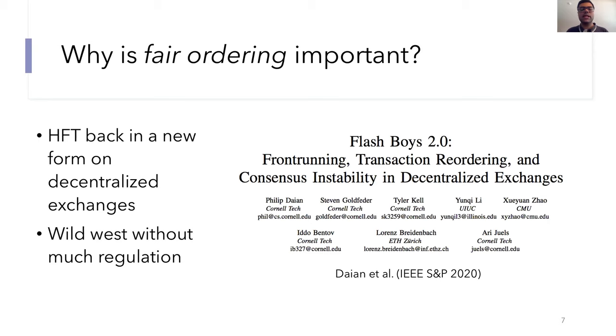So they capitalize on this information asymmetry in order to make small profits on a really large volume of transactions. Over the years, high-frequency trading has been subject to a lot of regulation, and it's no longer the wild beast it once was. But in some sense, high-frequency trading is exactly what we're seeing on decentralized exchanges today. So this recent paper by Phil Dian and others at S&P 2020 showed the rampant rise of bots on the Ethereum network waiting to make profits from unsuspecting users by manipulating the transaction ordering.